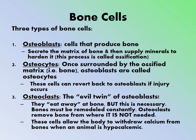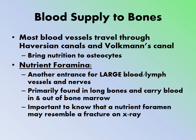Osteoclasts are essentially the evil twin of osteoblasts — they eat away at bone. However, this is necessary because bones must be constantly remodeled. Osteoclasts remove bone from where it is not needed and allow the body to withdraw calcium from bones when an animal is hypocalcemic. If a patient has low blood calcium, the body automatically takes calcium from the bones via osteoclasts. This is why appropriate calcium levels in the diet are critical to prevent fragile bones.